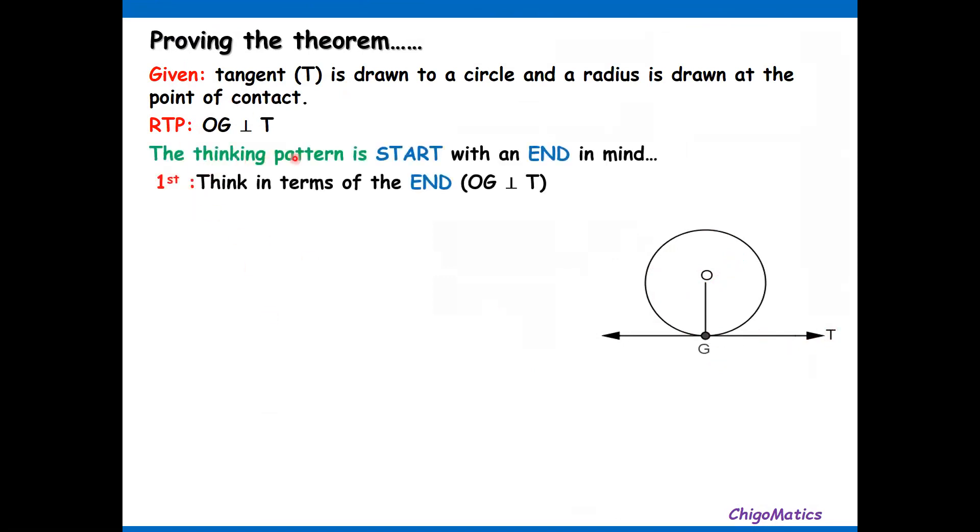The thinking pattern is start with an end in mind. First think in terms of the end—that is, OG perpendicular to T—and ask how can I arrive at this.